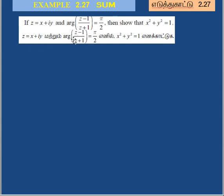Z is X plus iY, and the argument of (Z minus 1)/(Z plus 1) equals π/2. We need to show that X squared plus Y squared equals 1.